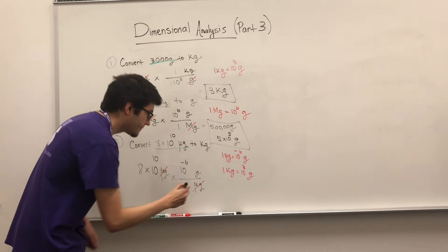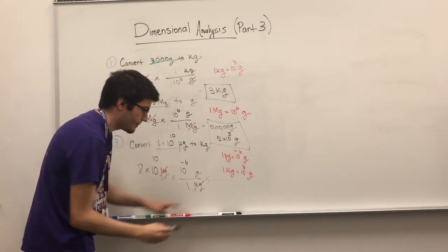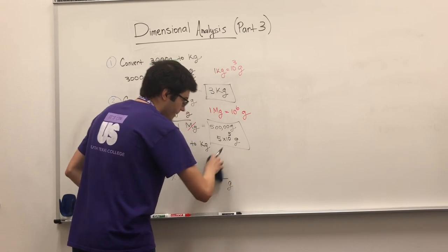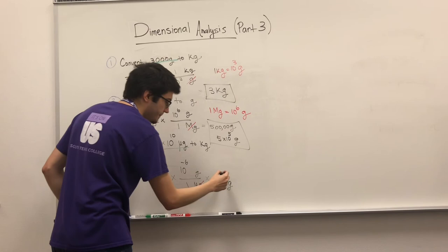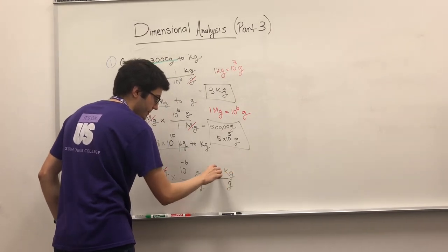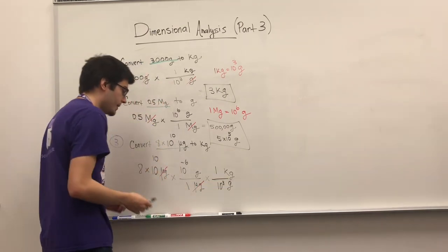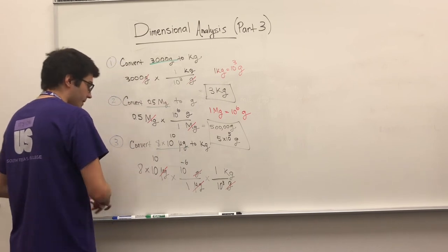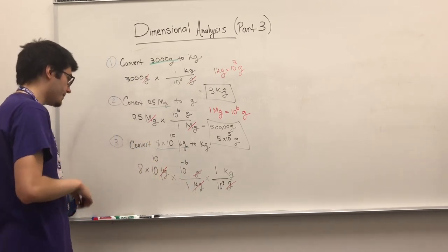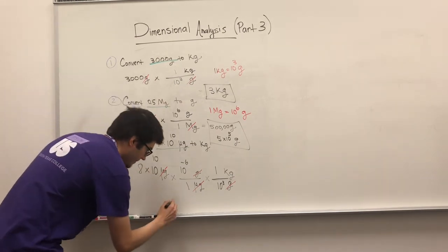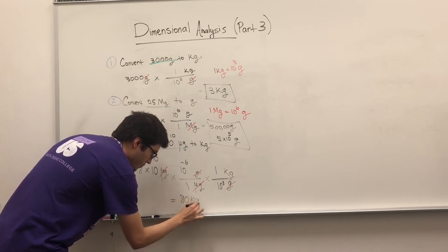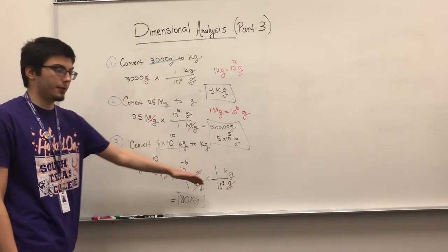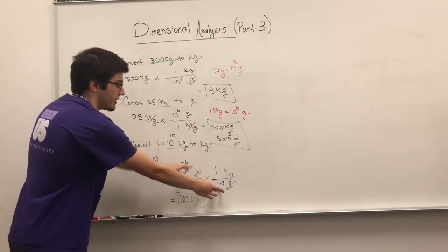Now convert grams to kilograms. Put grams on the bottom and kilograms on top. The conversion is one kilogram equals 10 to the 3 grams. The grams cancel out, and when you plug this into your calculator you get 80 kilograms. That's how you do a two-step problem — just multiply twice, make sure all your units cancel, and you're left with what you want.